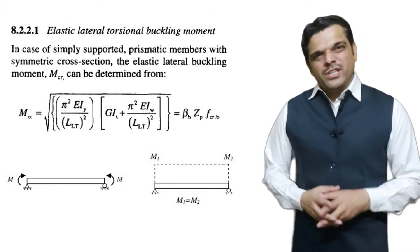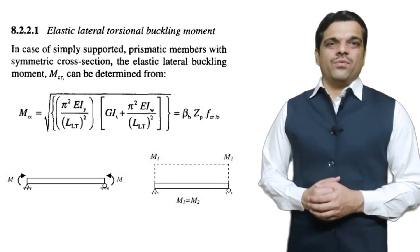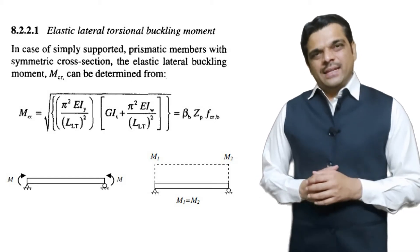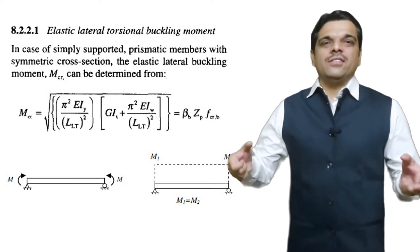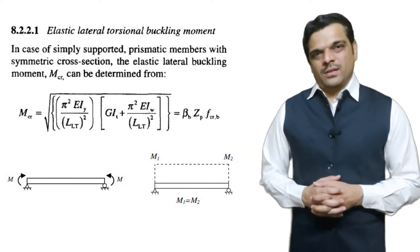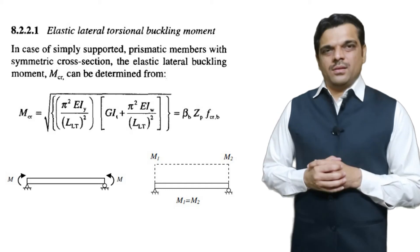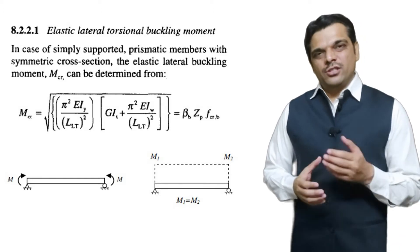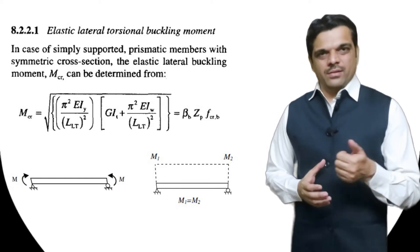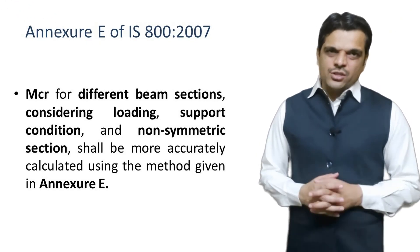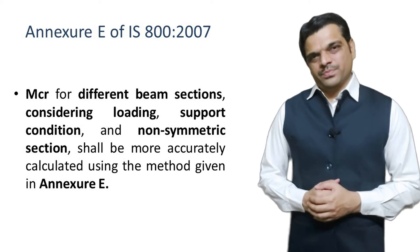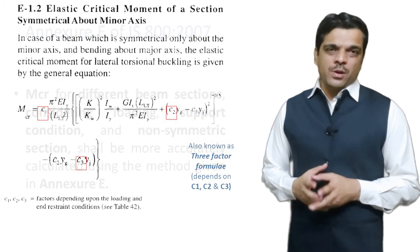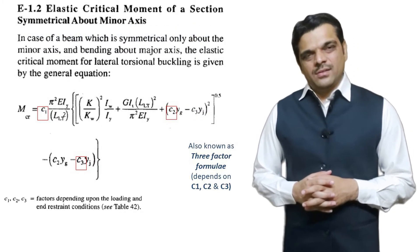In clause 8.2.2.1, a formula is given for evaluating the critical moment for elastic flexural torsional buckling. This equation is derived for the case of uniform moment across the member, so it may be known as the simplified approach. In this uniform moment condition, each section of the member reaches the critical moment of buckling together. For the generalized condition, we have to refer to Annexure E of the code, where a detailed formula is given with three factors: C1, C2, and C3.